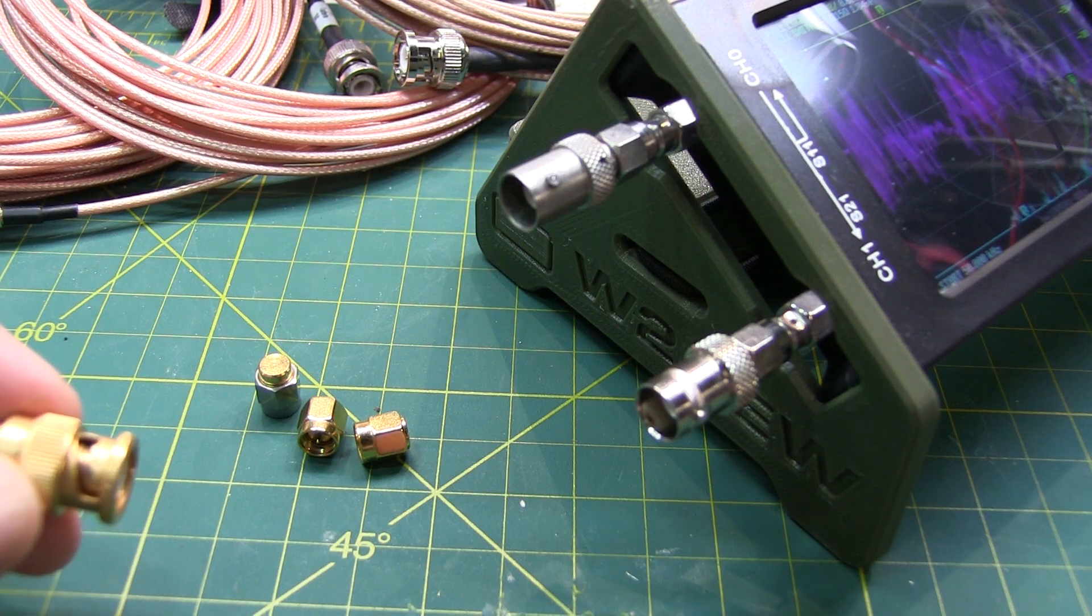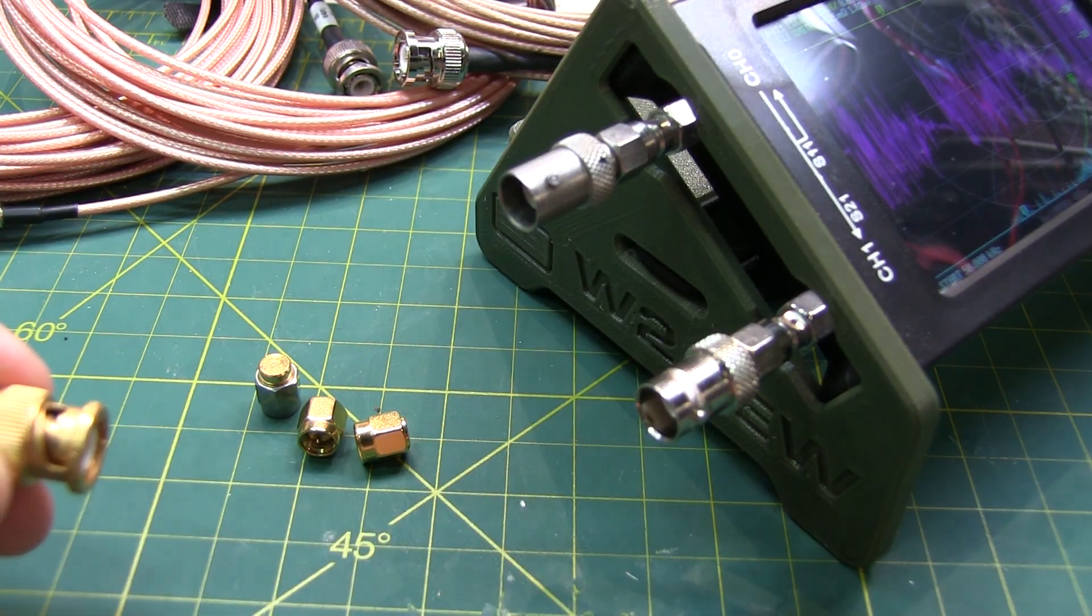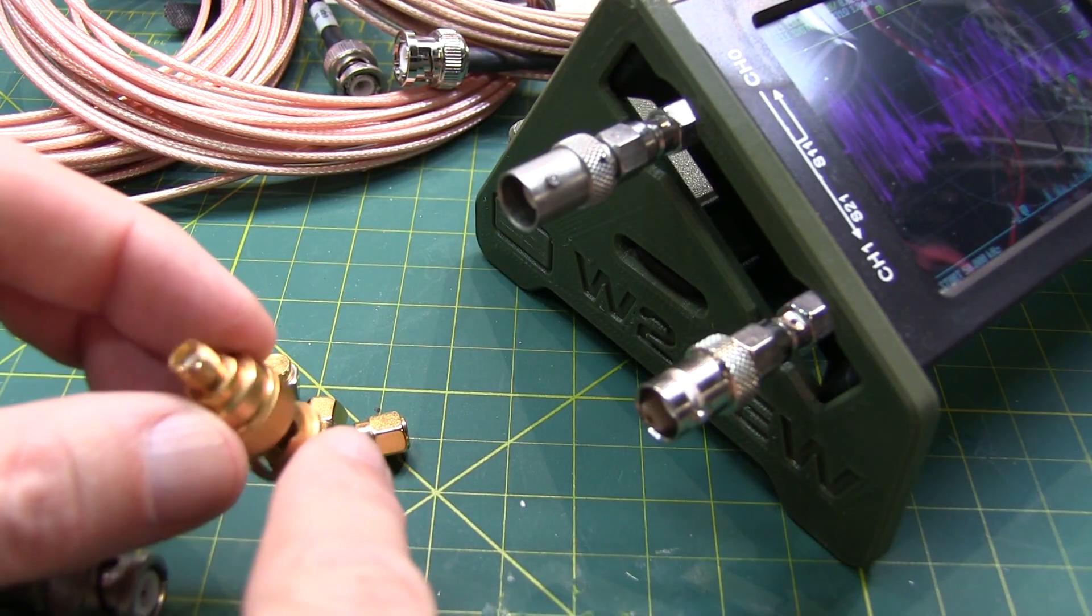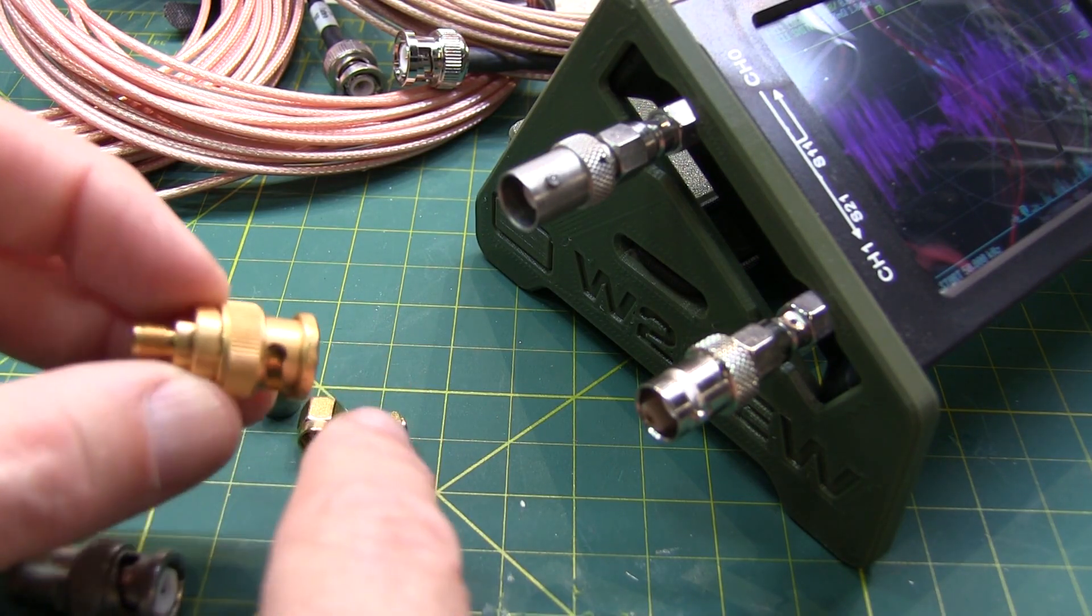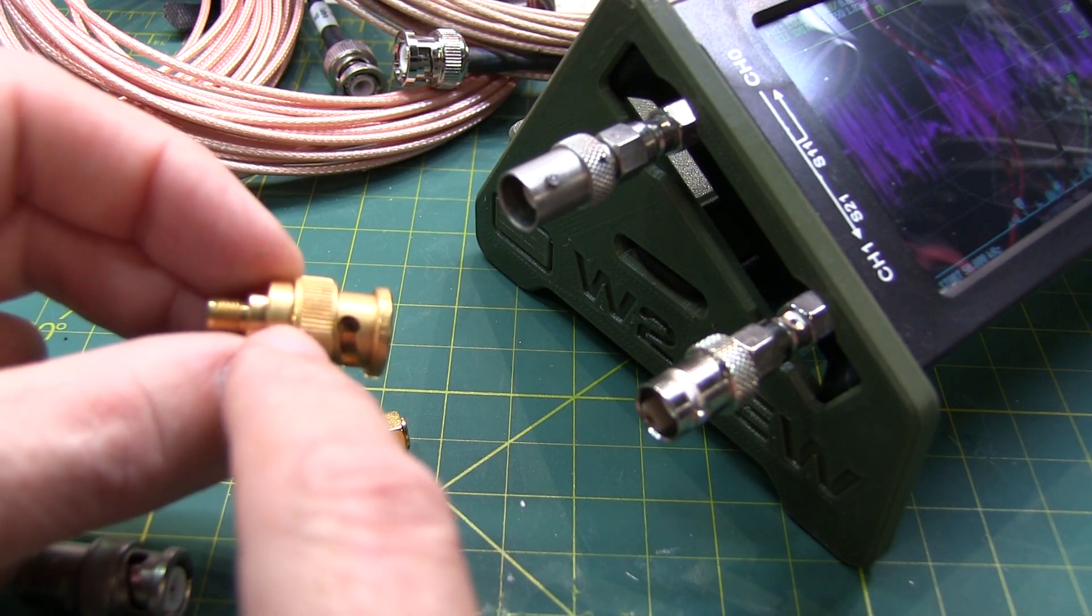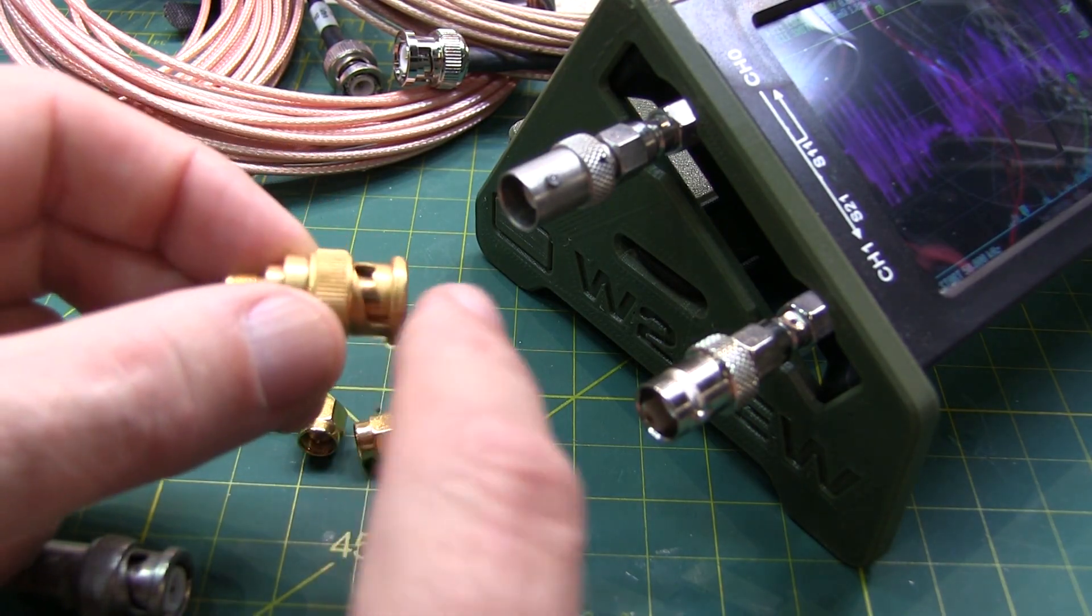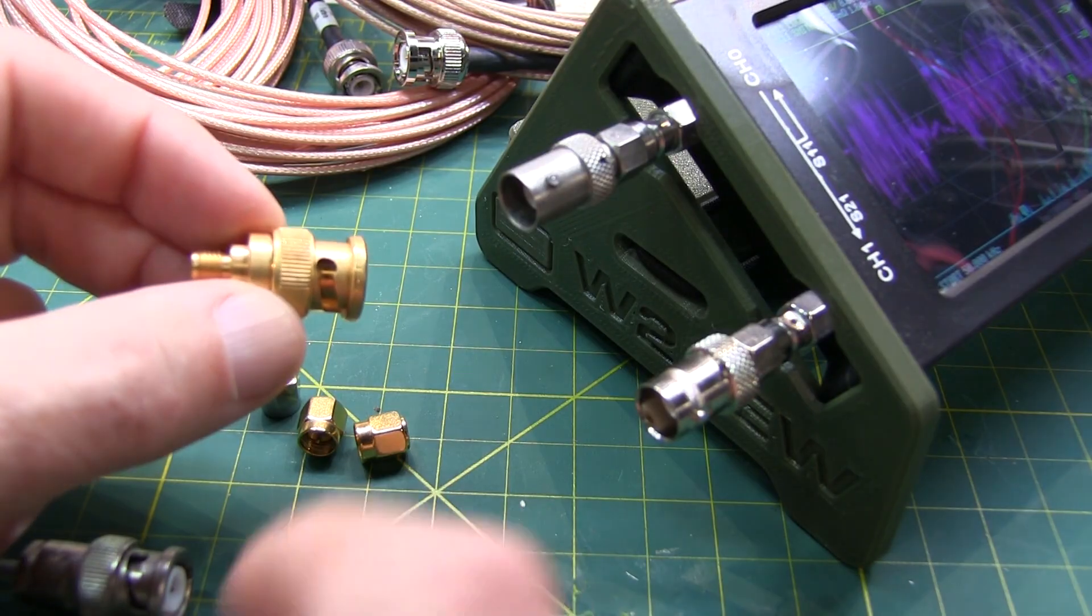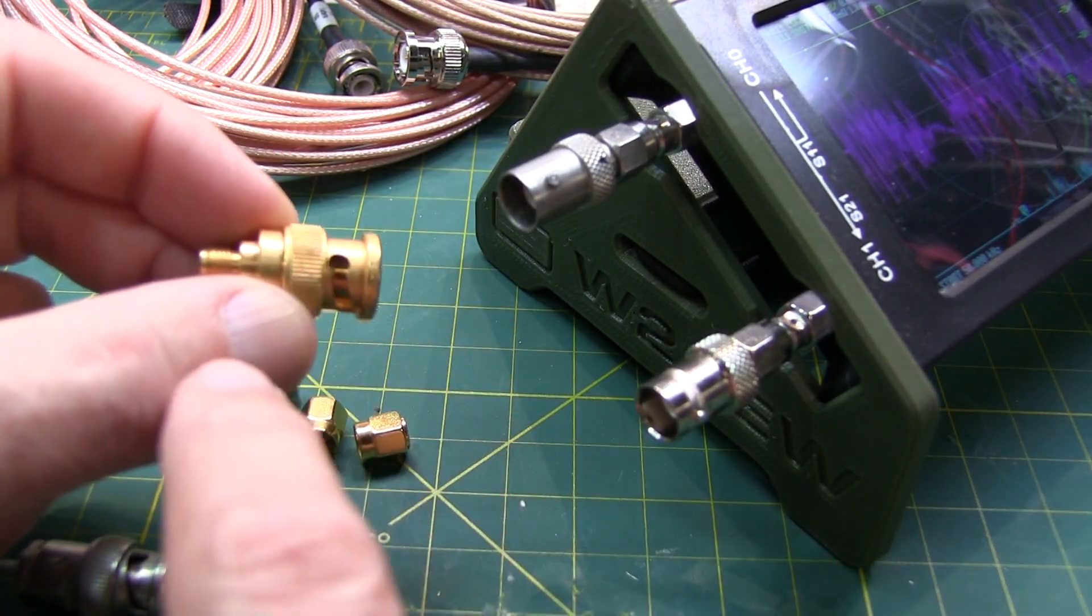So normally, when doing the calibration, I would use these open load and short SMA calibration standards on the SMA connectors themselves. But I really want to do the calibration with these connectors included, so I'm going to essentially use another high-quality BNC to SMA adapter. And I'll just put these calibration standards on the end of this here, and use this as essentially my calibration standard. Now of course, that means that this is going to be included in the calibration process. But I'm not too worried about it. I expect the degradation, if any, from this adapter to be very small.